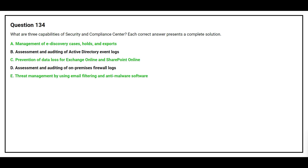The correct answers are: Option A, management of e-discovery cases, hold and exports; Option C, prevention of data loss for Exchange Online and SharePoint Online; and Option E, trade management by using email filtering and anti-malware software.